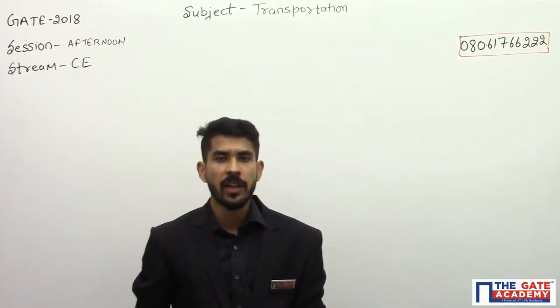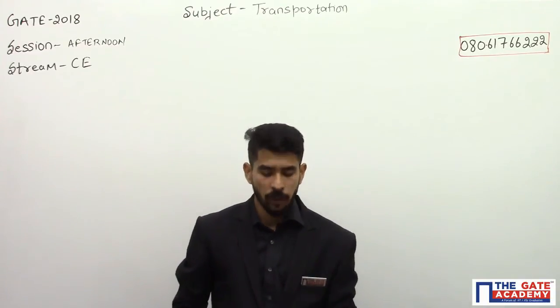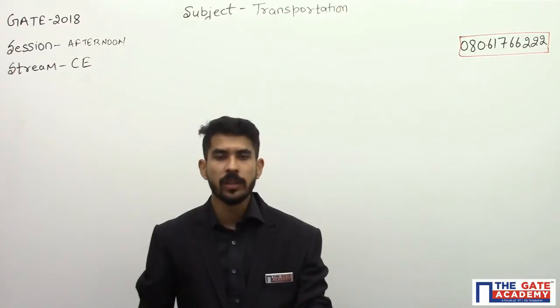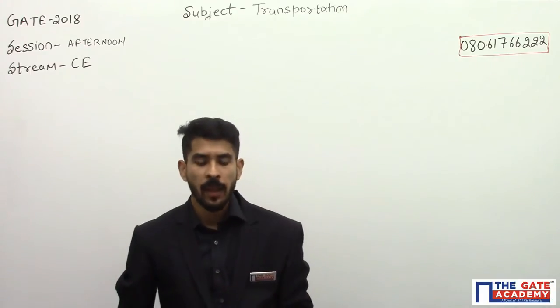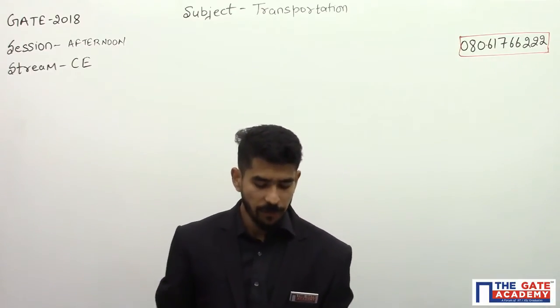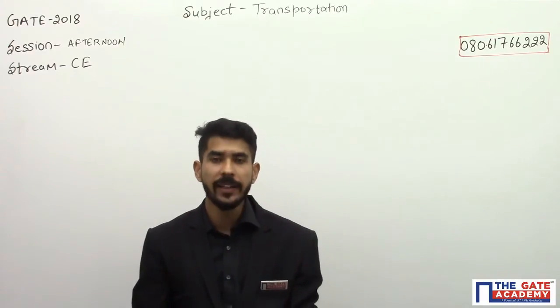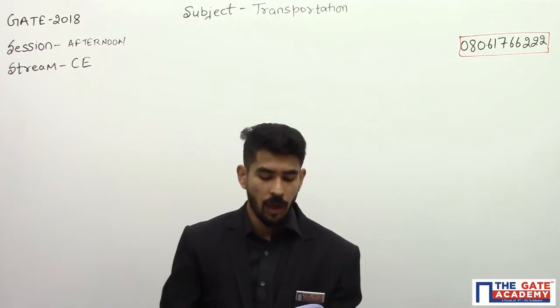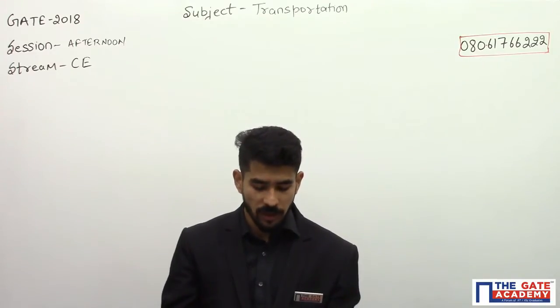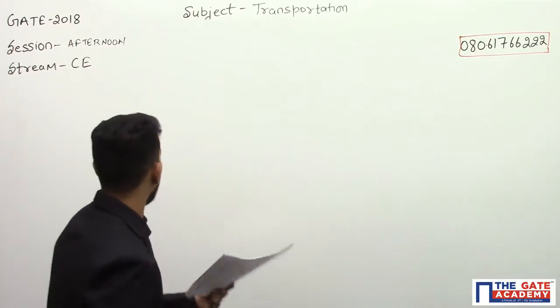Let us discuss a question asked in GATE 2018 in the afternoon paper. The question is from transportation engineering. The question says a 7.5 meter wide two-lane road on a plain terrain is to be laid along a horizontal curve of radius 510 meters.